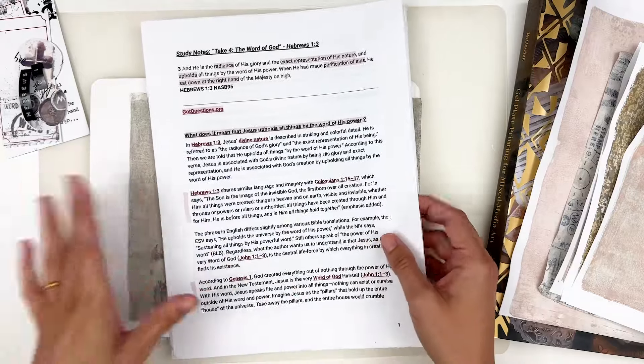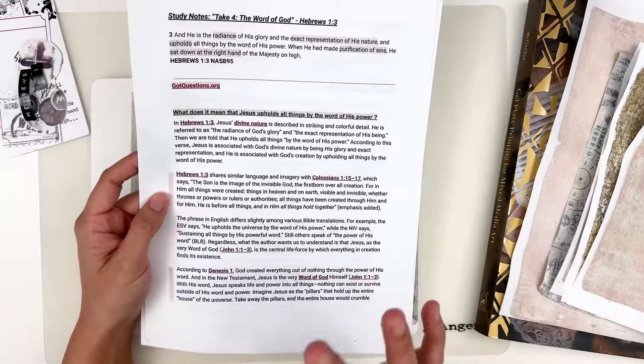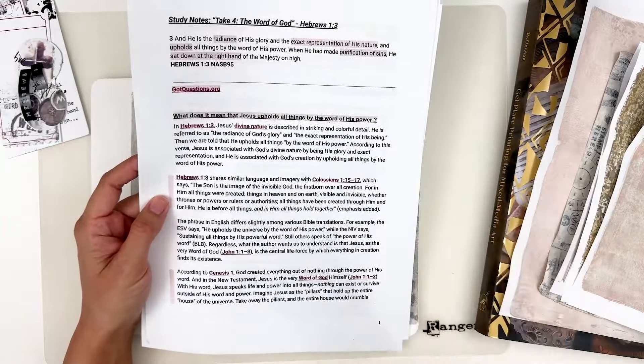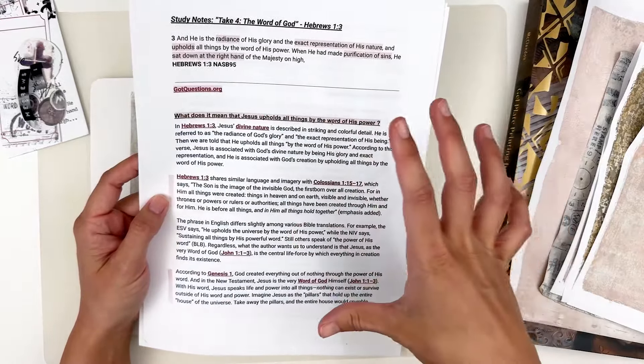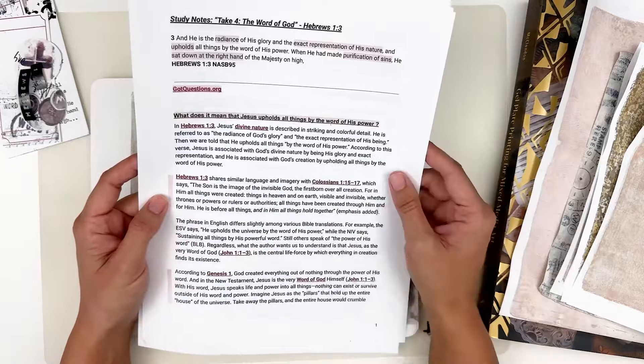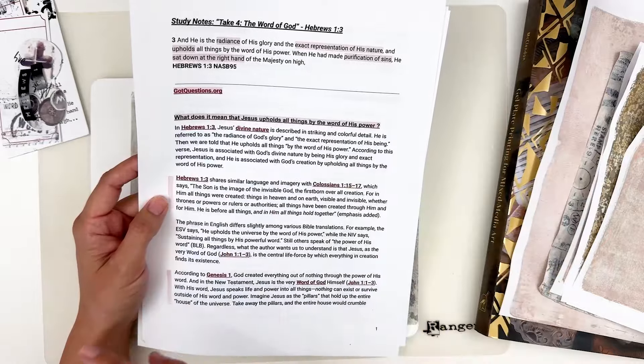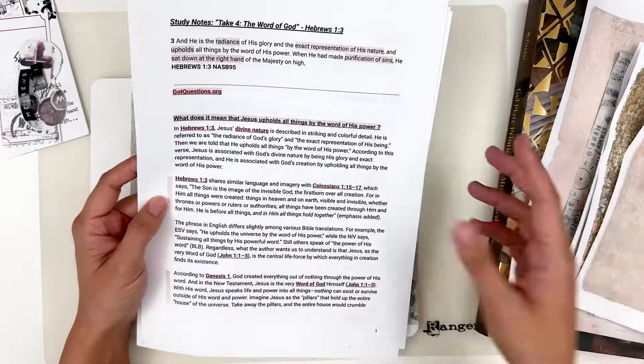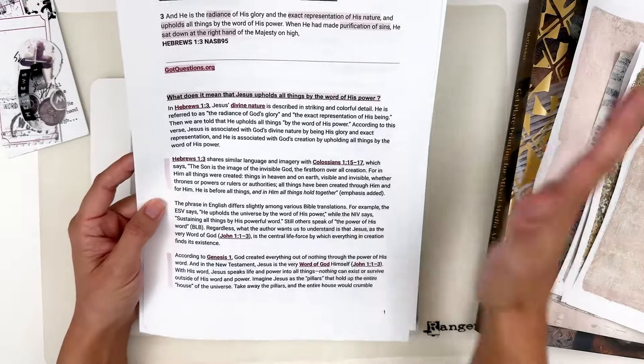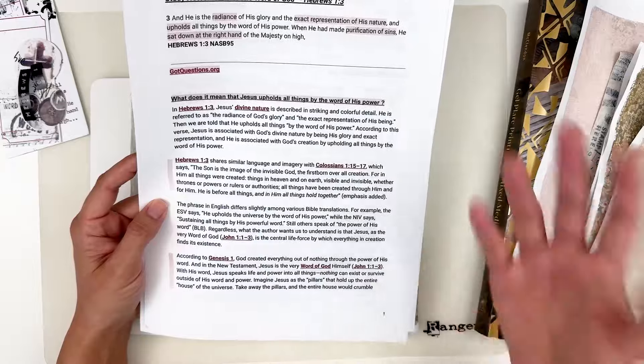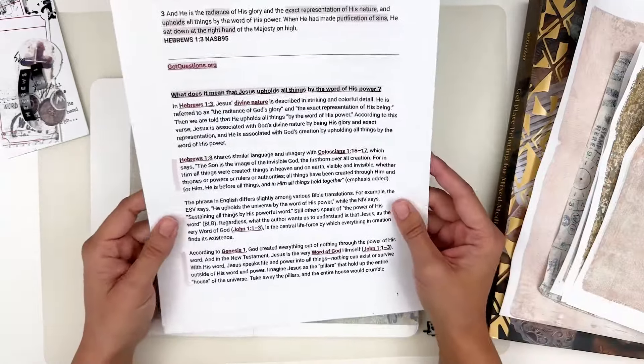Going through week three, we are looking at Hebrews 1:3. And that verse here in my NASB translation says, and he is the radiance of his glory and the exact representation of his nature and upholds all things by the word of his power. When he had made purification of sins, he sat down at the right hand of the majesty on high. So again, you can find these notes linked down below for you guys. I am not going to cover everything. I just had a couple of highlights that I wanted to kind of point out to you.